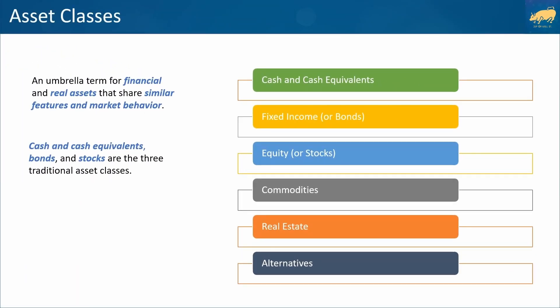An asset class is an umbrella term for a collection of assets that share similar characteristics and market behavior. Broadly speaking, from most to least risky or volatile, asset classes include cash and cash equivalents, fixed income or bonds, equity or stocks, commodities, real estate, and alternatives like hedge funds, private equity, cryptocurrency, and collectibles. Each one of these asset classes has characteristics that influences its value over time.